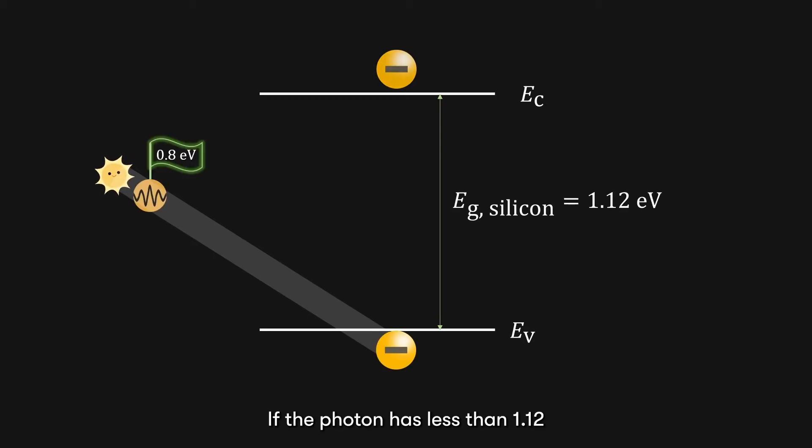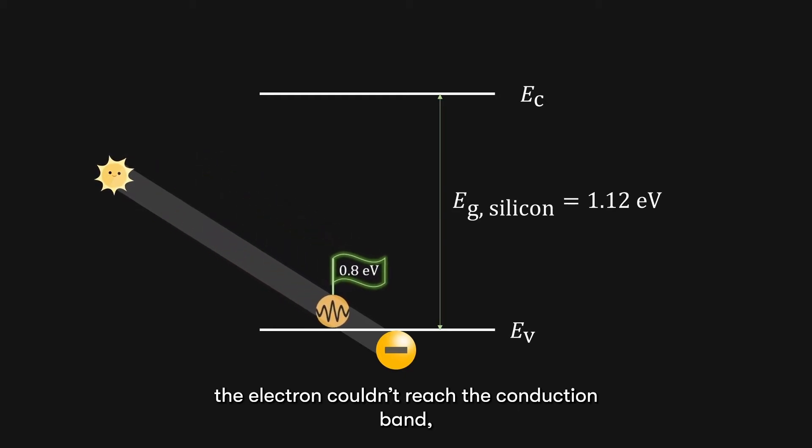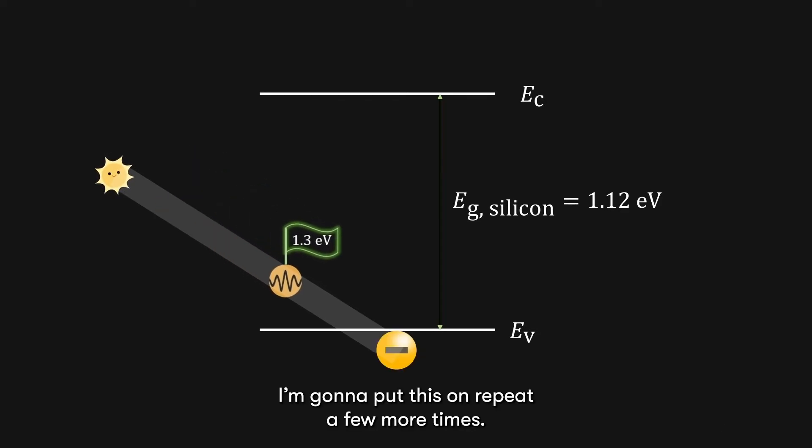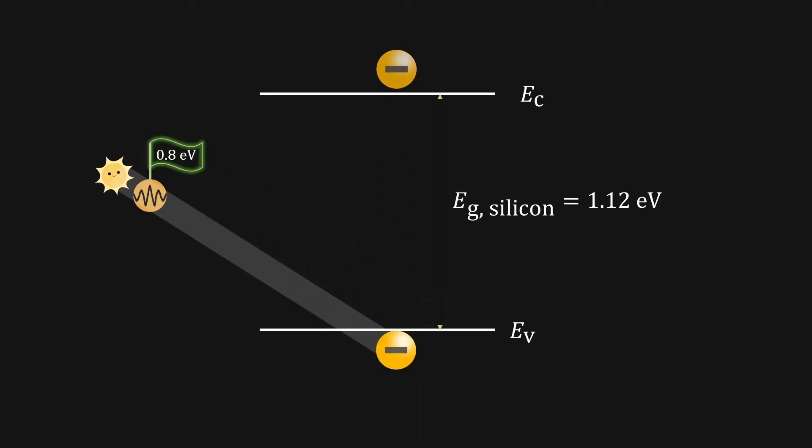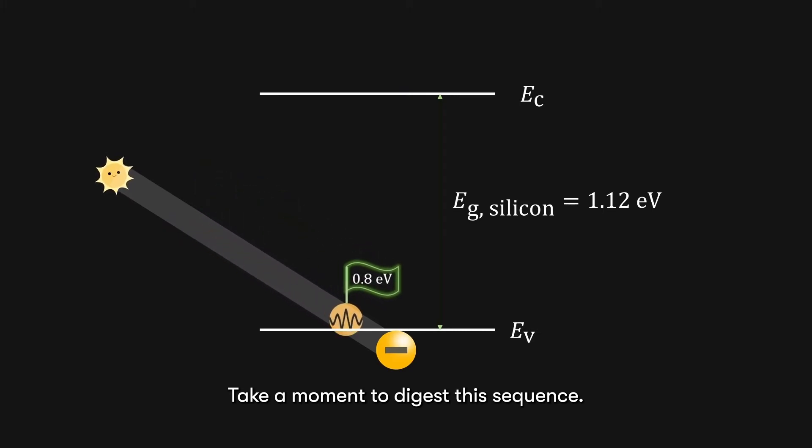If the photon has less than 1.12 electron volts of energy, like 0.8 electron volts, the electron couldn't reach the conduction band, and hence no excitation. I'm going to put this on repeat a few more times. Take a moment to digest this sequence.